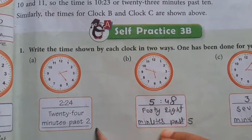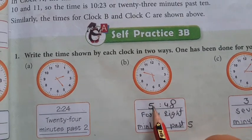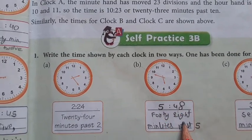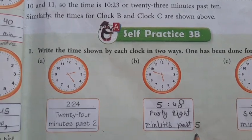How many hours is this? How many hours is this? 5 hours 48 minutes. How many hours is this? 48 minutes past 5.